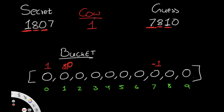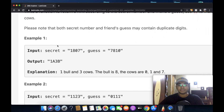Finally, secret has 7 and guess has 0. Index 7 gets +1, going from -1 to 0, indicating 7 exists in both but in different positions. For guess 0, index 0 gets -1, going from 1 to 0. All bucket values are now 0, telling us all numbers in secret are also in guess, just the three non-bull digits are in wrong positions.